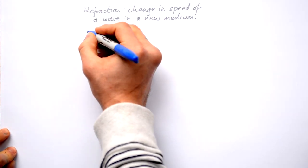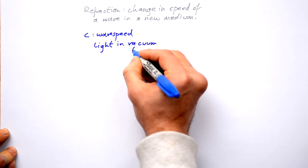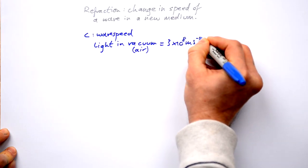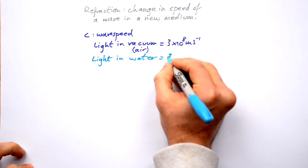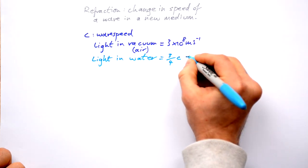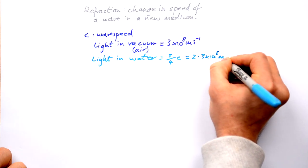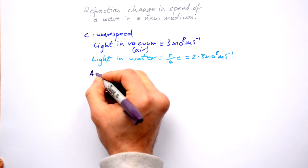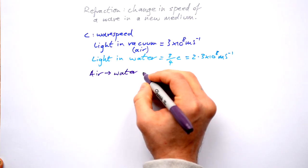We give the symbol C for the speed of a wave. Light in a vacuum — very similar for air — is 3 times 10 to the 8 meters per second. Light in water, however, travels at about three-quarters the speed of light in a vacuum, that's about 2.3 times 10 to the 8 meters per second. So quite a big difference. When light goes from air to water, the speed changes.